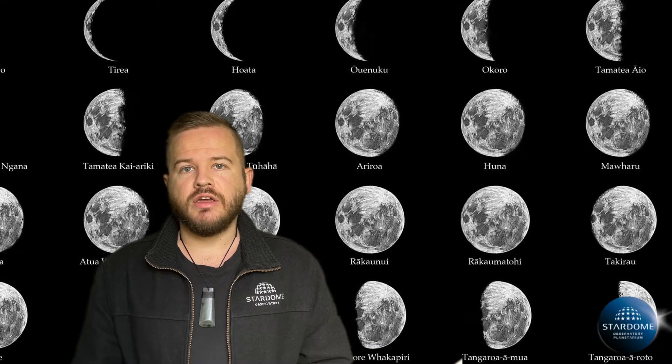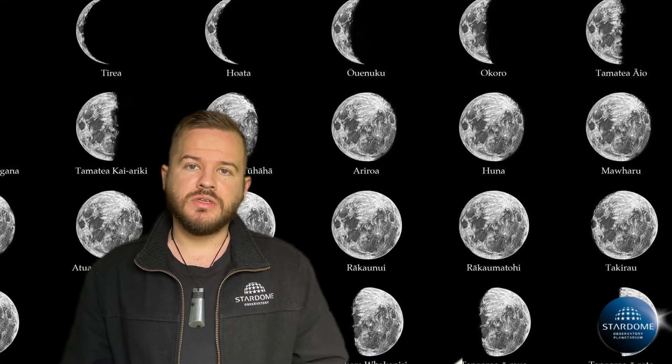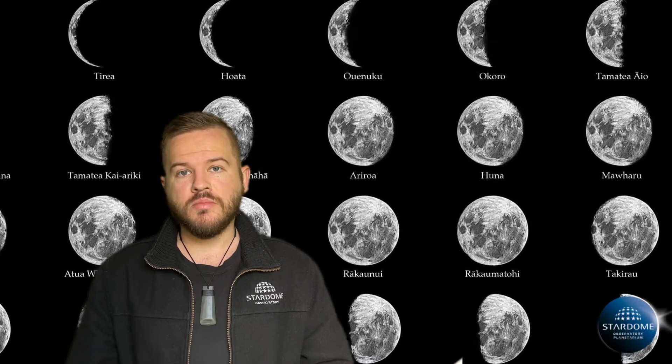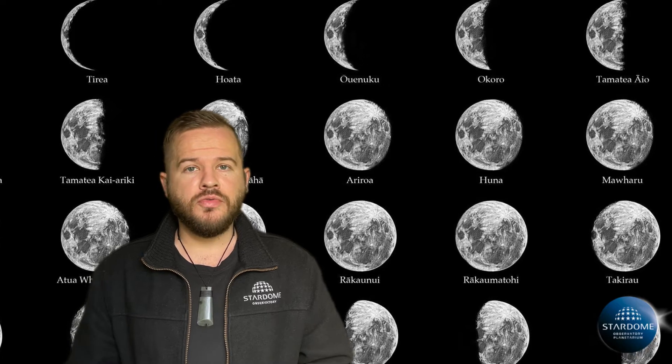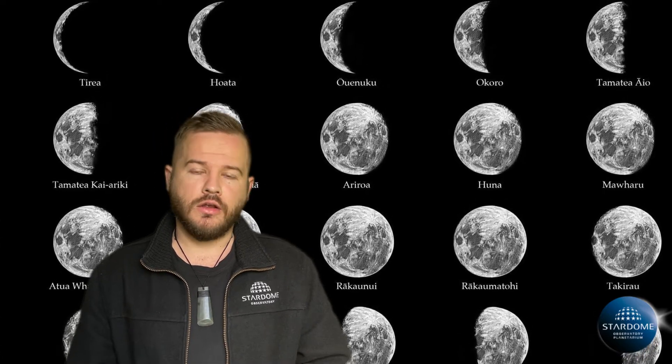Certain phases within the maramataka are used for planting certain types of crops, and for marking different changes in our environment. Like many cultures around the world, this lunar calendar is still in use here in Aotearoa.